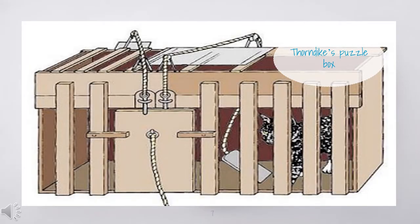This is Edward Lee Thorndike's puzzle box. The classic example of Thorndike's SR theory was a cat learning to escape from a puzzle box by pressing a lever inside the box. After much trial and error behavior, the cat learns to associate pressing the lever, which is the stimulus, with opening the door, which is the response. This SR connection is established because it results in a satisfying state of affairs — the cat escapes from the box. The law of exercise specifies that the connection was established because the stimulus-response pairing occurred many times.